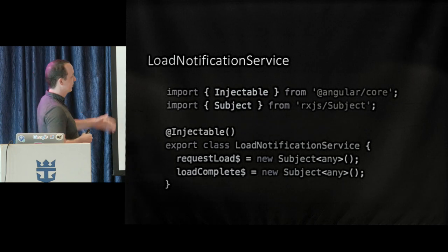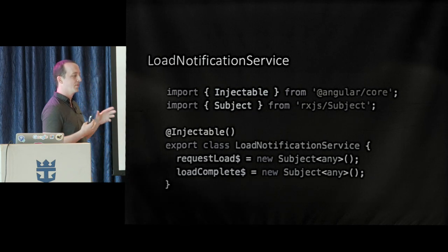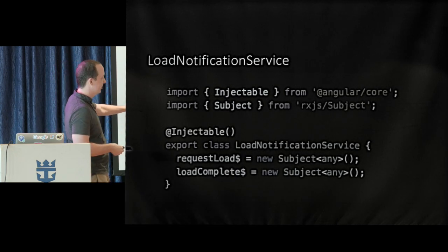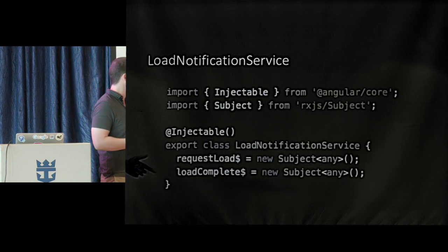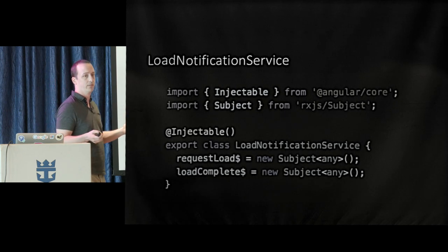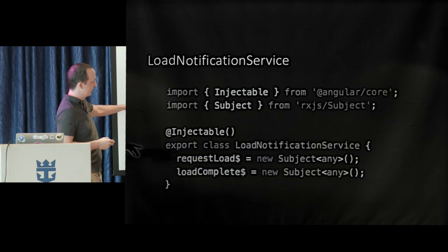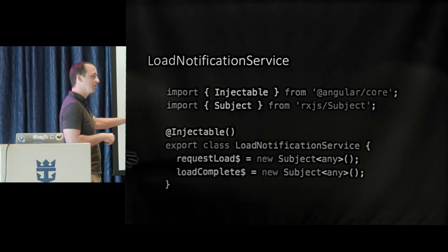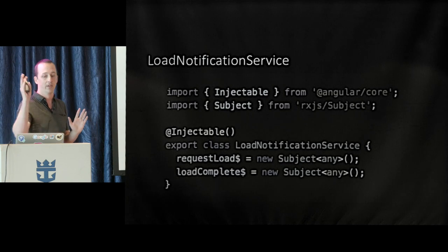The LoadNotificationService is very simple — all the code right here. We've got two subjects. Subjects, if you're not familiar, are like observables but they're also observers — they allow you to funnel events through them. We've got requestLoad, which we pump signals through when we're ready to request loading data again, and loadComplete, which we call next on whenever the load is done. The TouchDragToLoad component calls requestLoad to say "load more data," and the latest news component calls loadComplete to tell the marker "I'm done loading, you can animate back up."